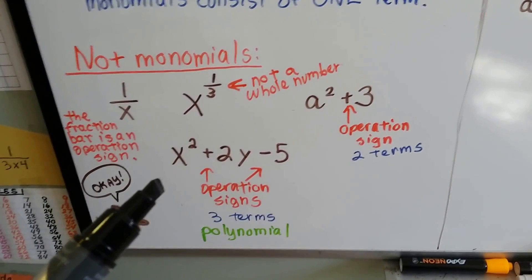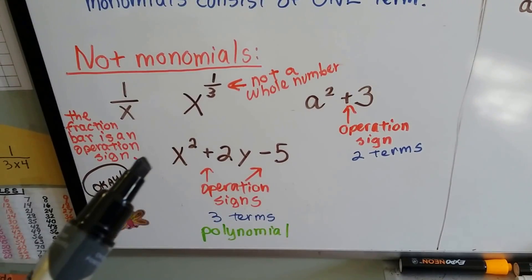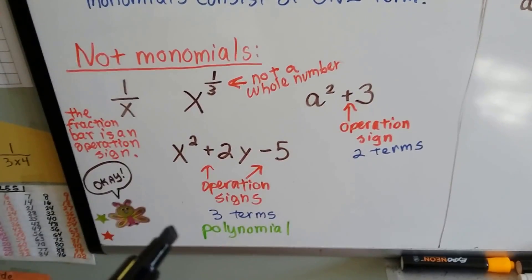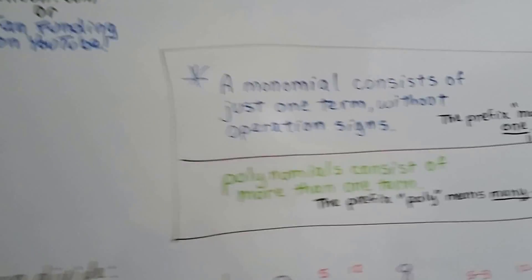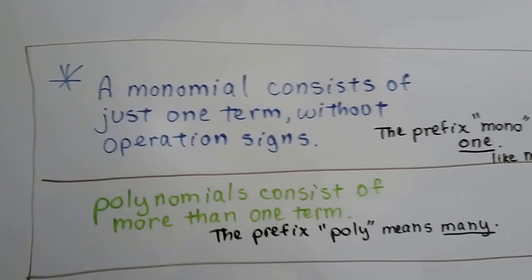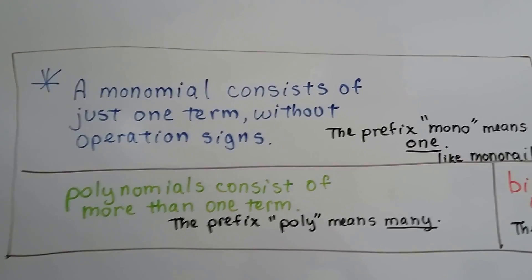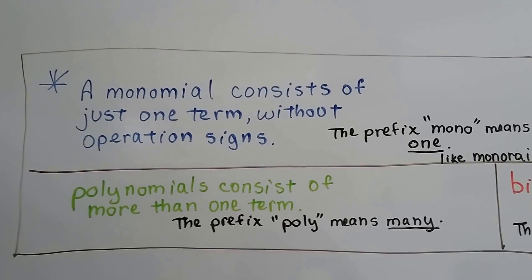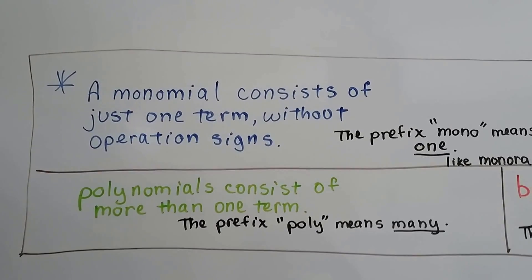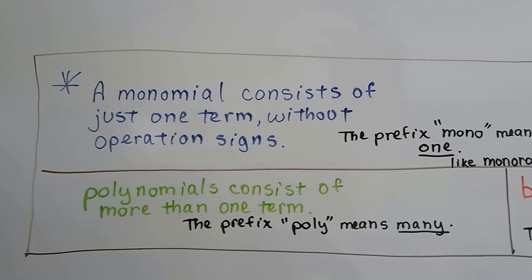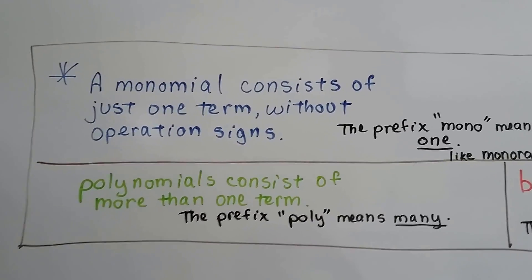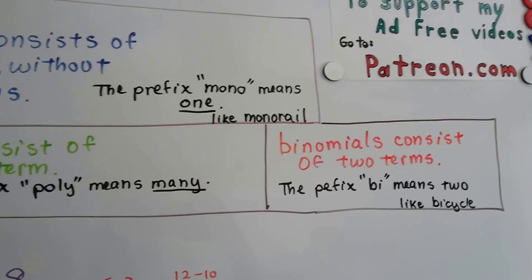This is a polynomial — there are two operation signs, so there are three terms here. A monomial consists of just one term without operation signs. Like the prefix mono, a monorail is a train on one track. Polynomials consist of more than one term — poly means many. And binomial, the prefix bi means two, like a bicycle.